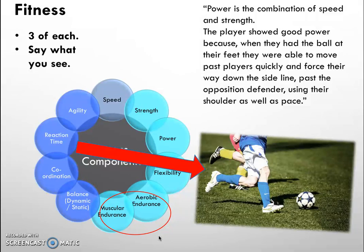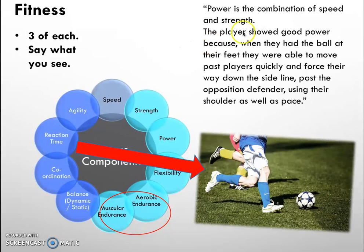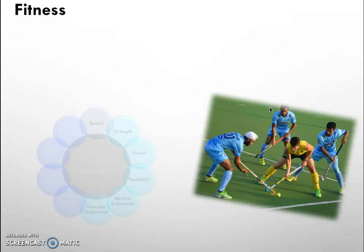So what does a good answer look like? When talking about somebody's strength — let's say power — you can define it as a combination of speed and strength, which shows depth of knowledge. Then you say: the player showed good power because when they had the ball at their feet they were able to move past players quickly and force their way down the sideline past the opposition defender, using their shoulder as well as pace. I've said why it was good and linked it to the performance I was watching — really important.